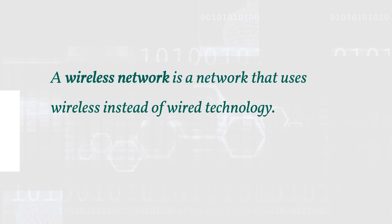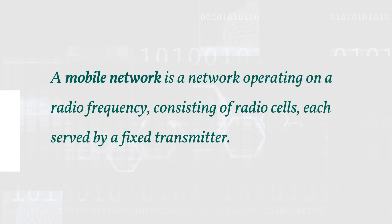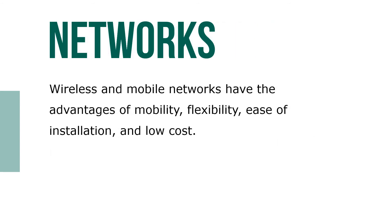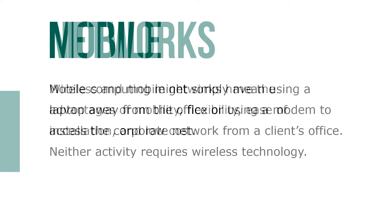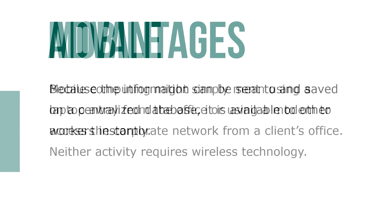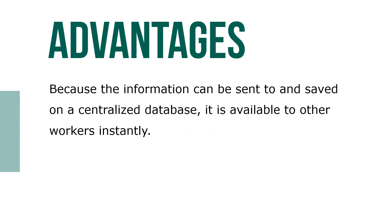A wireless network is a network that uses wireless instead of wired technology. A mobile network is a network operating on a radio frequency, consisting of radio cells each served by a fixed transmitter. Smartphones make up 52% of all web traffic globally as of 2019, which is essential for e-commerce as a growing number of customers buy products using smartphones. Wireless and mobile networks have advantages of mobility, flexibility, ease of installation, and low cost. Because information can be sent to and saved on a centralized database, it is available to other workers instantly.